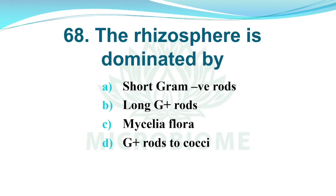And next, the rhizosphere is dominated by. Options: A) Short gram-negative rods, B) Long gram-positive rods, C) Mycelial flora, D) Gram-positive cocci. The right answer is Option A, Short gram-negative rods.